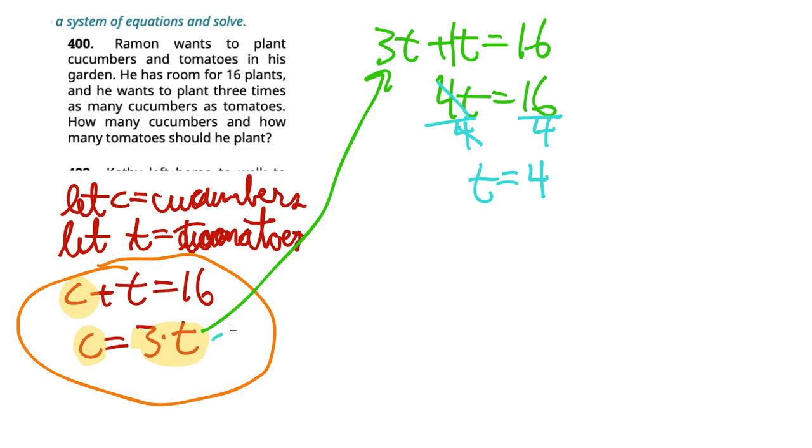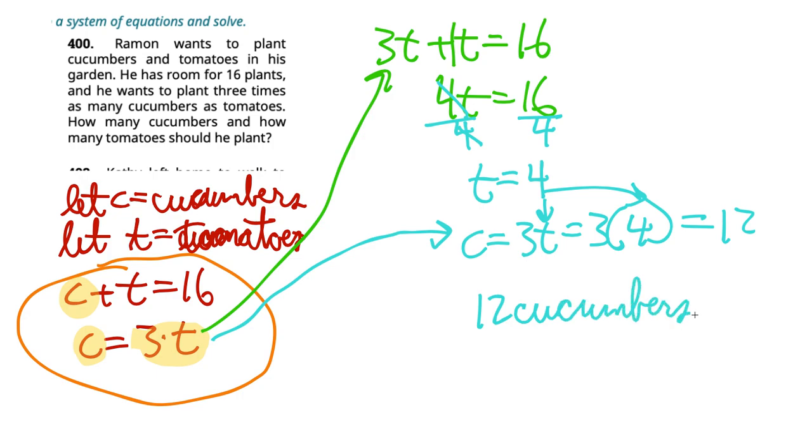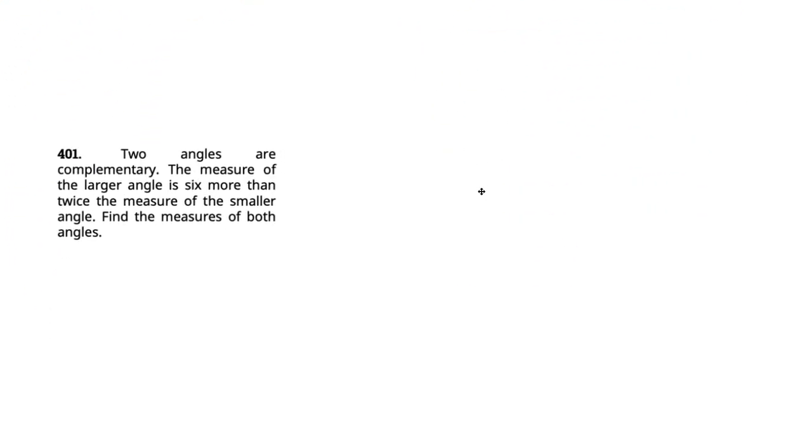And then we can reuse this equation. C equals three T, which is going to be three times four, so that's going to be 12. So we can write 12 cucumbers and then four tomatoes. And then we have our answer. Probably want to box it to make it easy for your teachers to find.